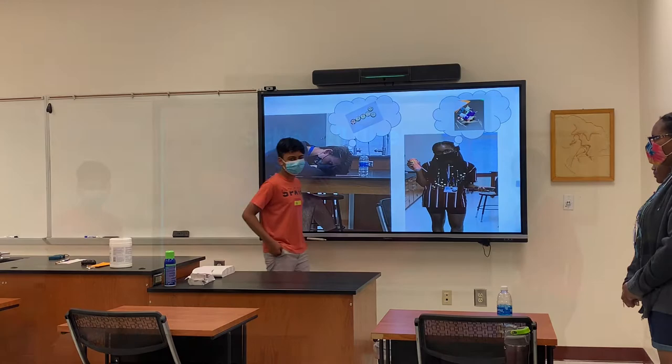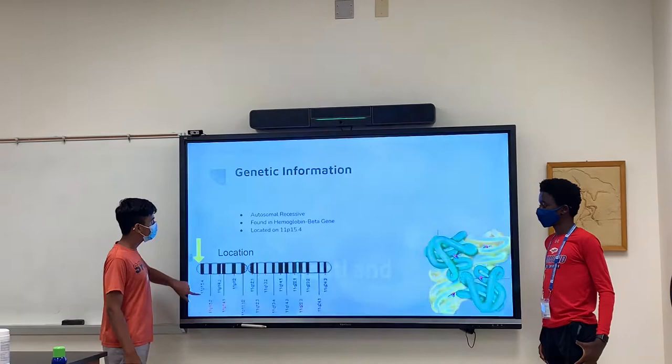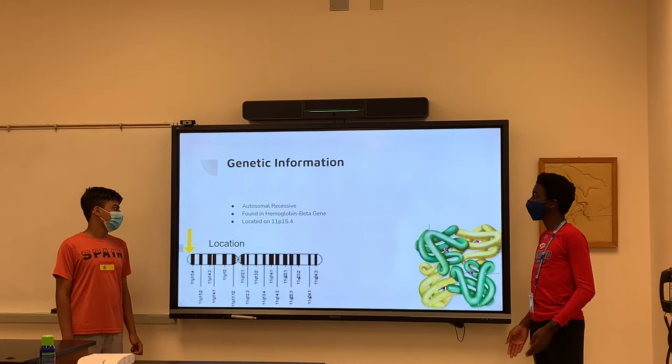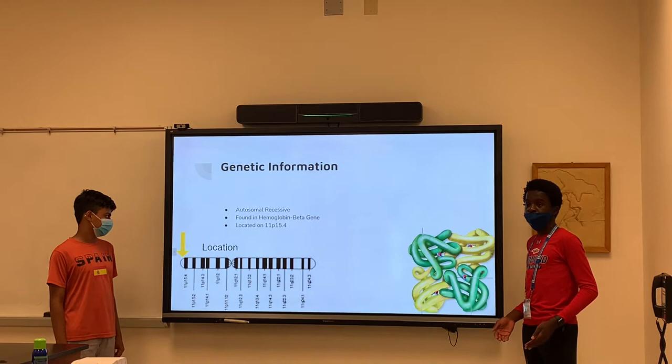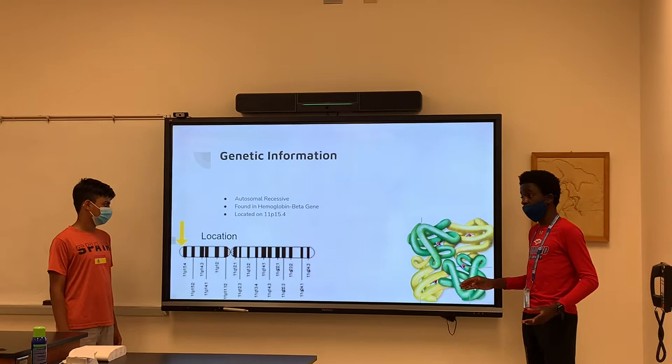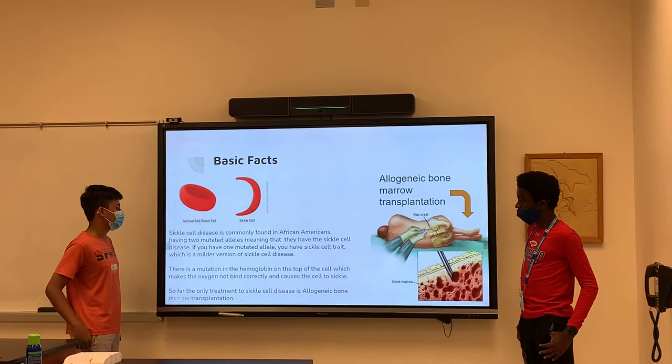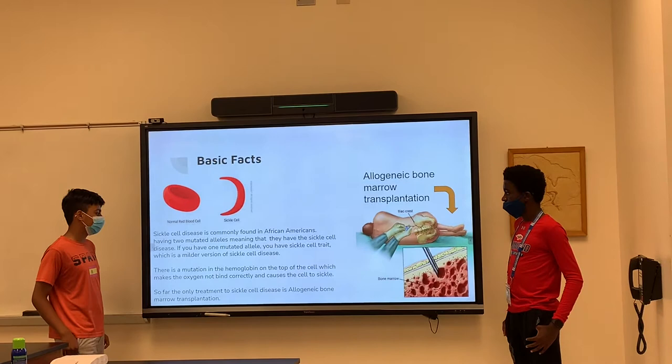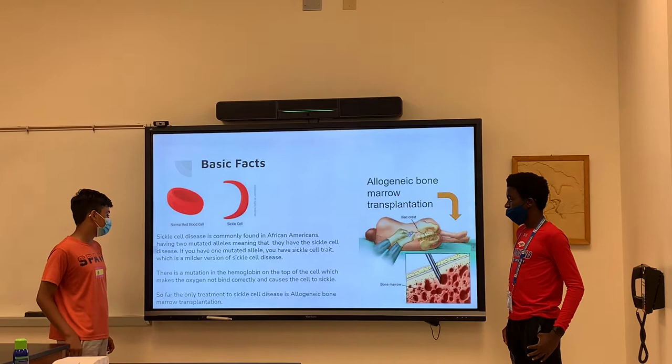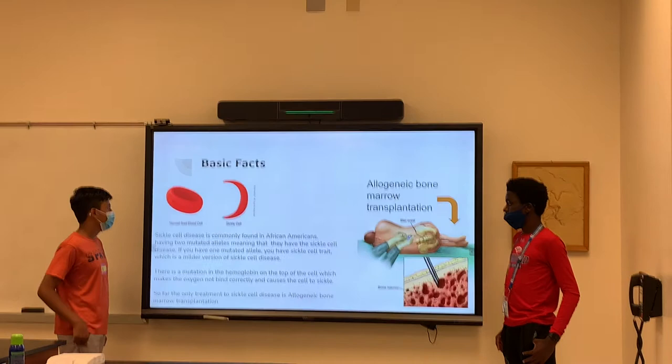This is Sickle Cell Disease presented by Ramsey. Some genetic information: sickle cell disease is an autosomal recessive trait. It is found in the hemoglobin beta gene, and is also located on the 11th chromosome on the short arm around position 15.4. Sickle cell disease is most commonly found in African Americans. Having two mutated alleles means you have sickle cell disease, and if you have one mutated allele, you have sickle cell trait. There is a genetic mutation in the hemoglobin at the top of the red blood cells, which causes the cell to sickle.